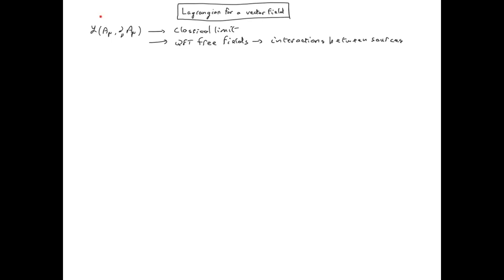First, we need to determine what is this Lagrangian. There are different ways to determine a Lagrangian in a quantum field theory. We saw one possible way when we were looking at scalar fields. We will now look at a different way. We will assume that we know what is a classical equation of motion — that is the classical limit of the theory — and from that we will build up our Lagrangian. We will first see how it works in the case of a scalar field as a warm-up, and then we will apply that to vector fields.